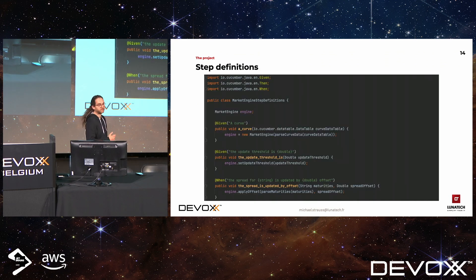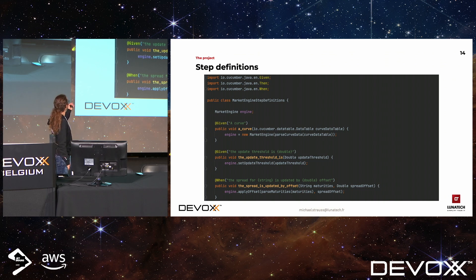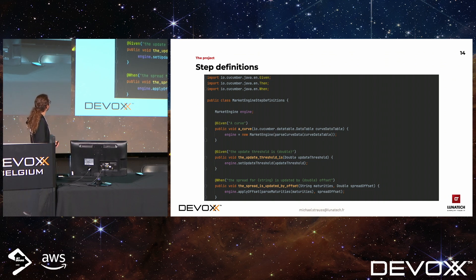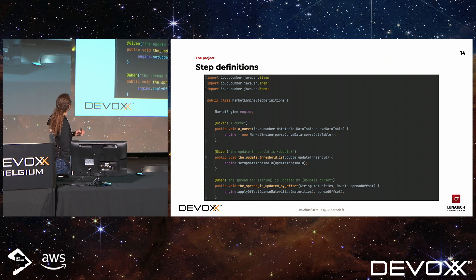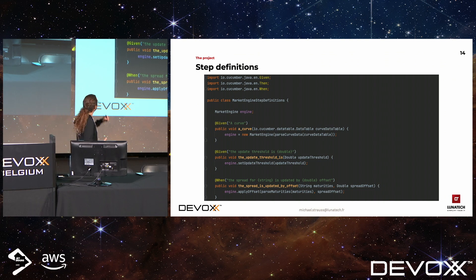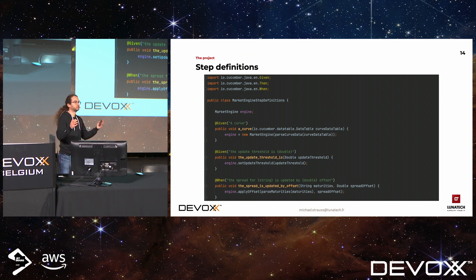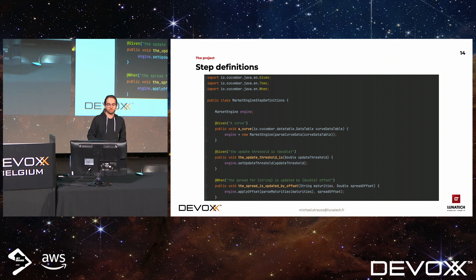So let's do that. We create a step definition file, which is just a Java class. We copy-paste the methods with the corresponding annotations and just fill in the body. For example, the first one creates a curve — instantiating a new market engine with the initial value as defined in the scenario. The second updates some parameters. The third triggers a computation via a market event. We do the same for all the steps.